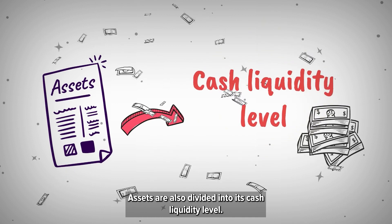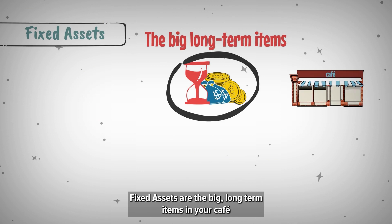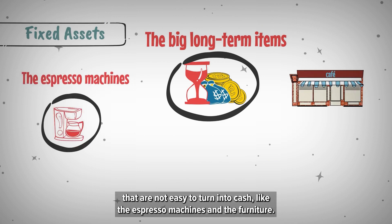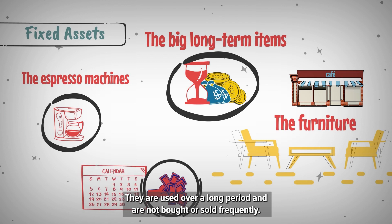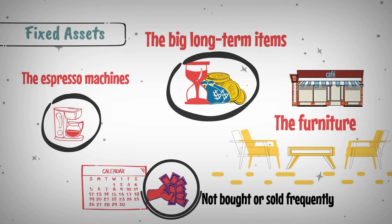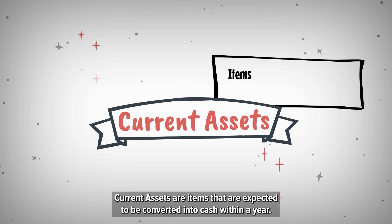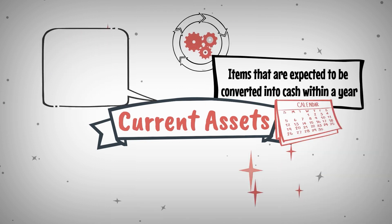Assets are also divided by their cash liquidity level. Fixed assets are the big, long-term items in your cafe that are not easy to turn into cash, like the espresso machines and the furniture. They are used over a long period and are not bought or sold frequently. Current assets are items that are expected to be converted into cash within a year.